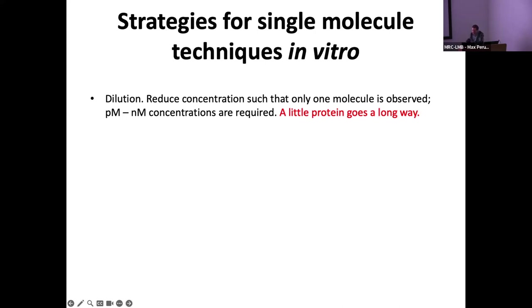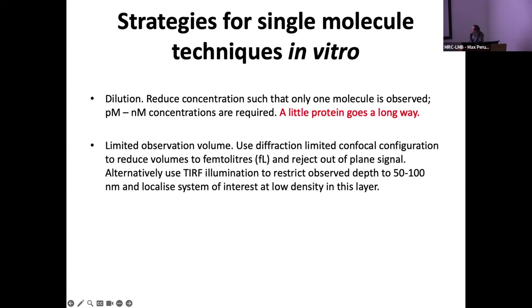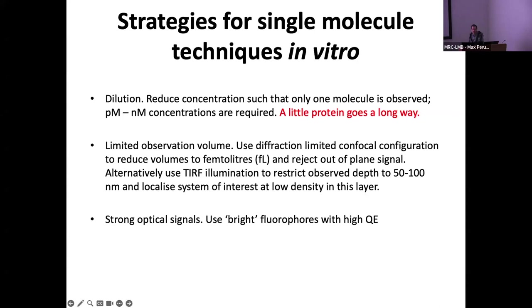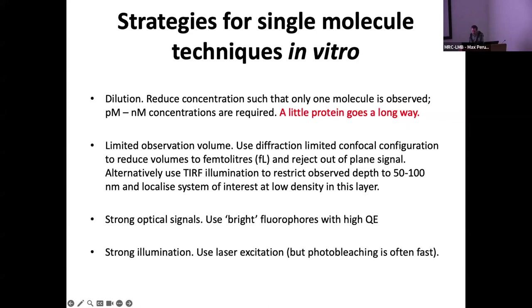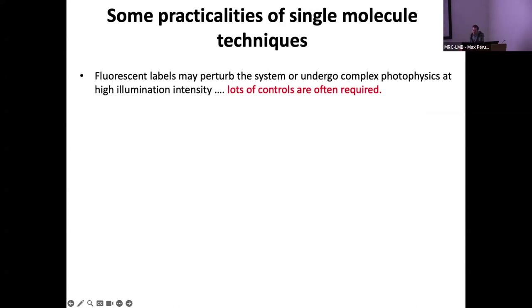One strategy is to reduce the concentration — just dilute down. Another strategy is to use a limited observation volume: create a confocal-type illumination or use TIRF illumination on the surface. A problem with this is you need very strong optical signals, so you need bright fluorophores with high quantum efficiency or very strong illumination. You have to be careful that what you're monitoring isn't photobleaching.